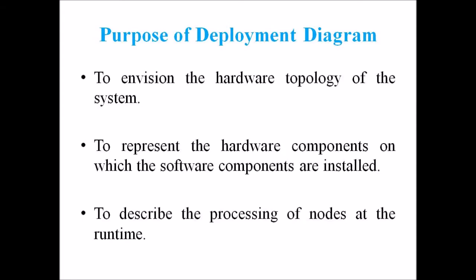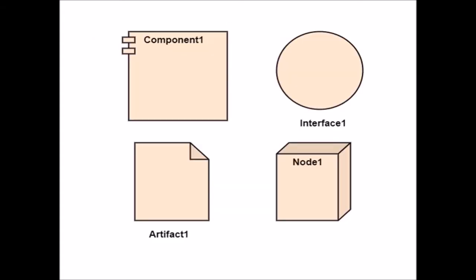Following are the major purposes of a deployment diagram. First, to envision the hardware topology of the system. Second, to represent the hardware components on which software components are installed. Third, to describe the processing of nodes at runtime.